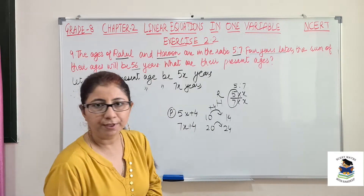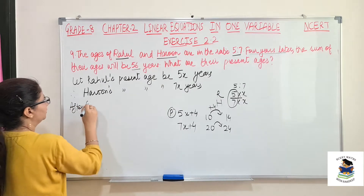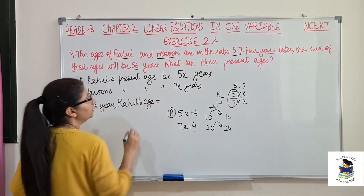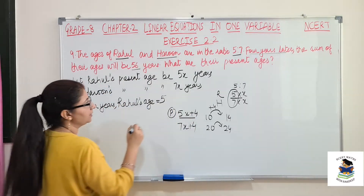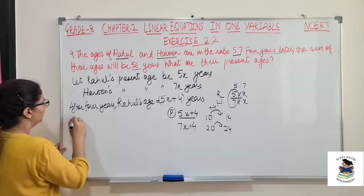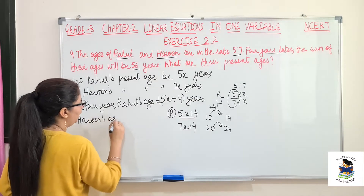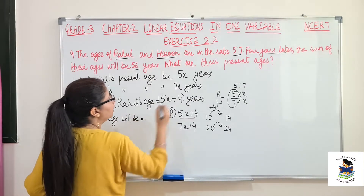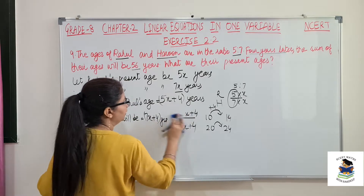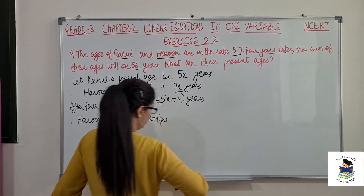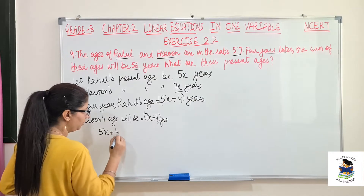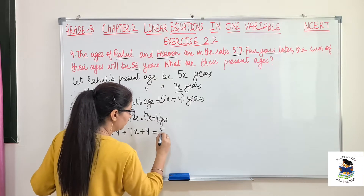After 4 years, Rahul's age will be 5x plus 4 years. And Haroon's age after 4 years will be 7x plus 4 years. These are their ages after 4 years, and their sum is given as 56. So therefore: 5x plus 4 plus 7x plus 4 equals 56.